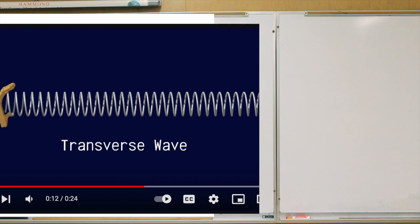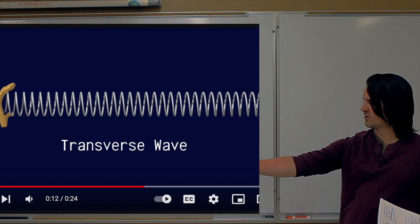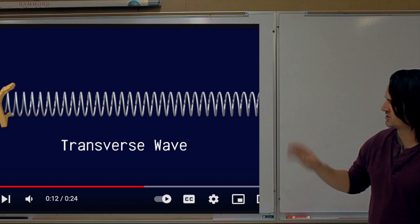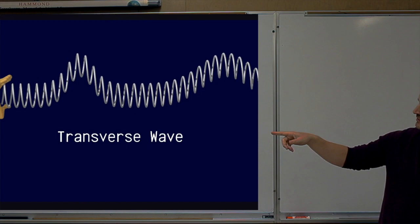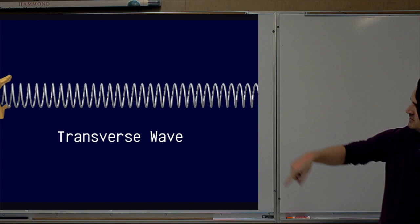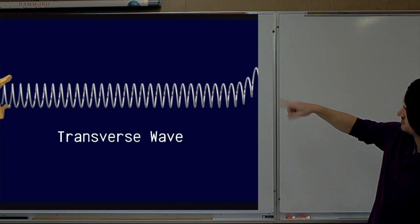Another nice way of demonstrating different kinds of waves is with a slinky. If you stretch the slinky out and attach one end, it's a great medium for seeing waves. When you oscillate one end of the slinky up and down, that up-and-down movement travels along the slinky — the metal of the slinky is moving up and down while the wave is moving left and right. That's a transverse wave.